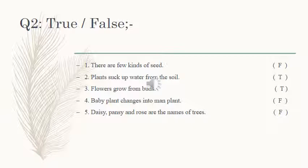Number 3: Flowers grow from birds. We have flowers from birds. Then grow from flowers. This is true. Number 4: Baby plants change into man plant. Baby plants grow from birds. This is false.